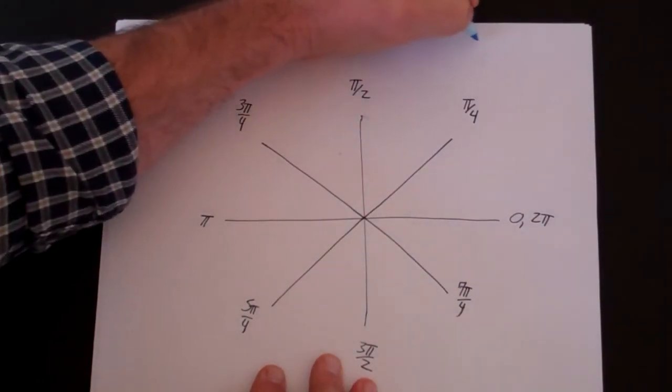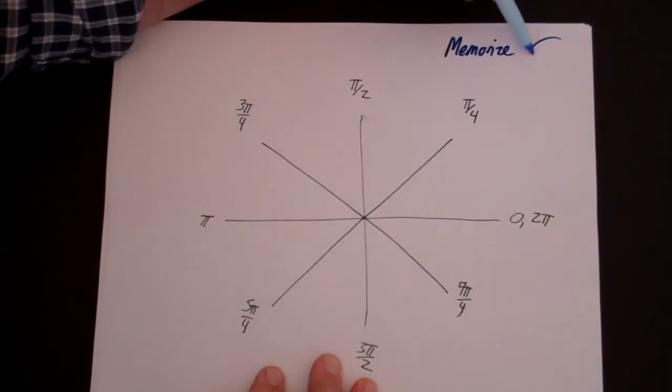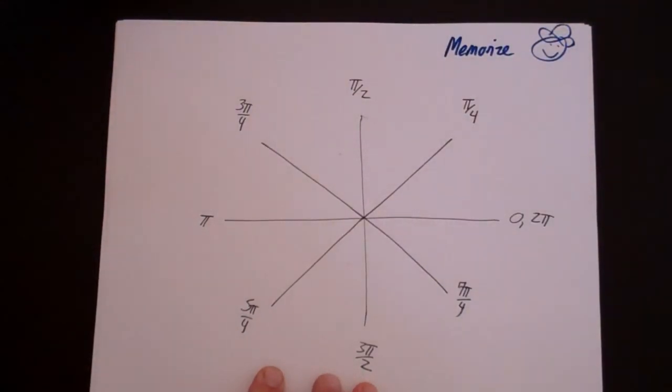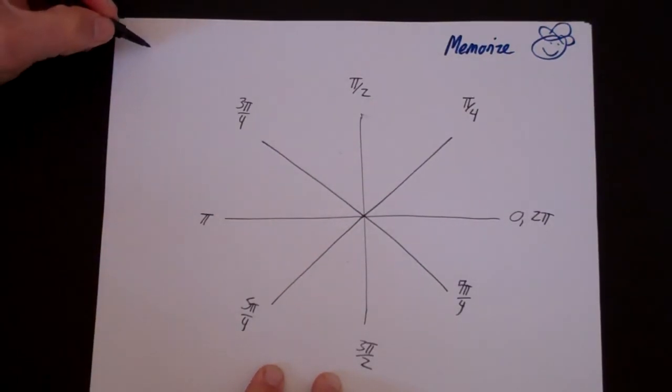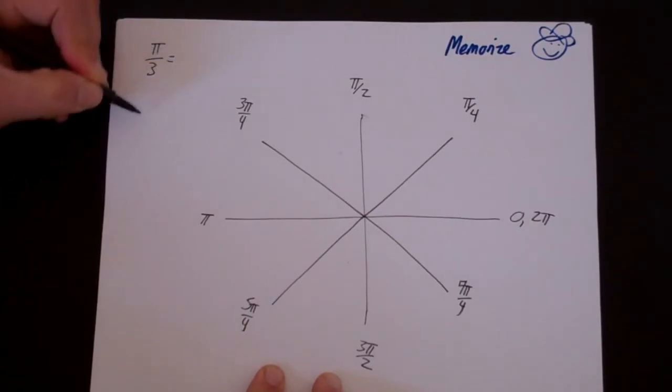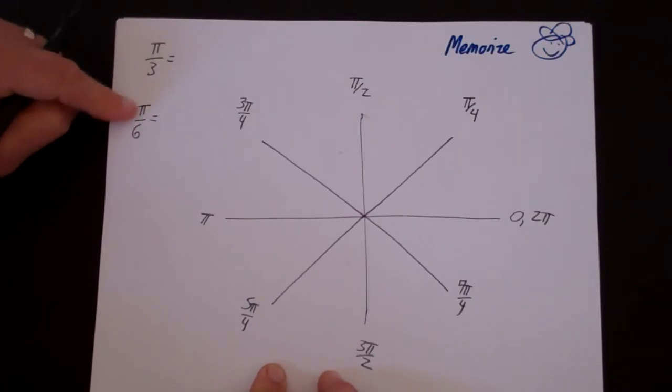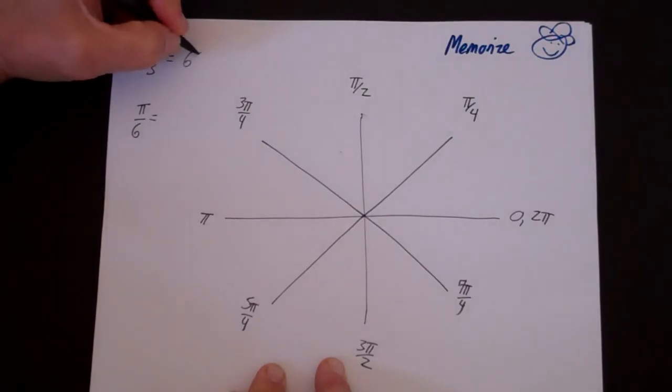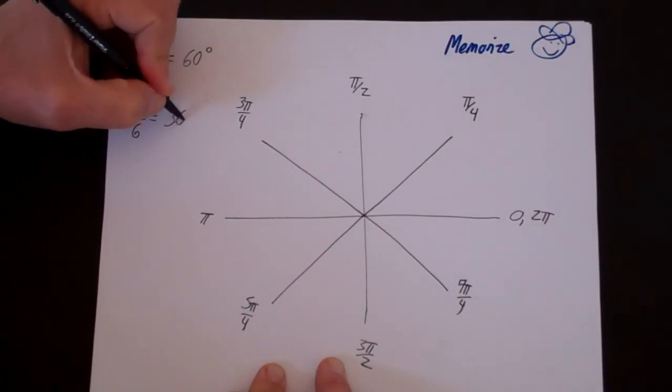So this is what you're going to want to memorize. So I'll give you time to write this down. In addition to that, there are two other very common ones that you want to memorize. And that's π over 3 and π over 6. You can always work out what these are, but they're so common you want to memorize them. π over 3 is equivalent to 60 degrees, and π over 6 is 30 degrees.